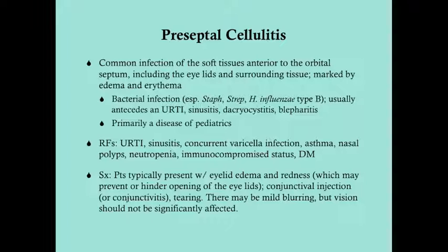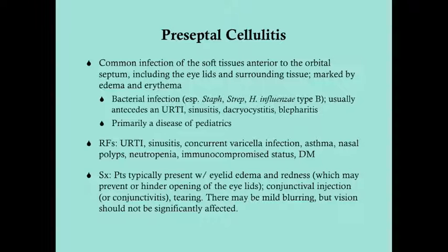Patients typically present with redness around the eyelids and surrounding tissue, which may make it difficult to open the eyelids — though not as severe as with orbital cellulitis. If you get in to examine the eye, you'll likely see conjunctival injection or conjunctivitis with pus and tearing. The patient may describe some mild blurring, but vision should not be significantly affected with preseptal cellulitis.